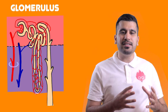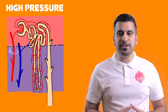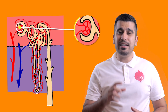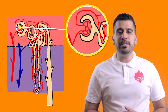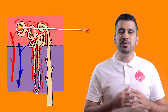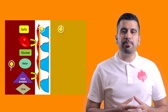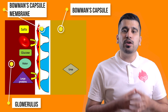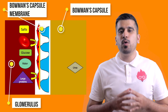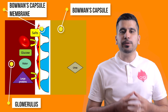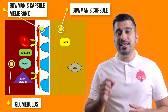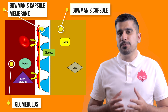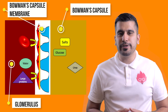Blood enters the glomerulus at high pressure. The glomerulus is a network of capillaries found in the kidneys. Due to the high pressure, blood forces out glucose, water, urea, and salts into the Bowman's capsule. This forms filtrate.